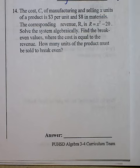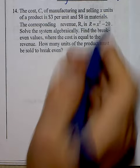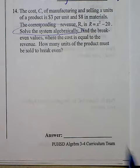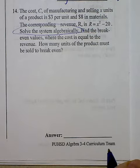The cost C of manufacturing and selling X units of a product is $3 per unit and $8 in materials. The corresponding revenue R is R equals X squared minus 20. Solve the system algebraically, so we can't solve using a calculator. Find the break-even values where the cost is equal to the revenue.